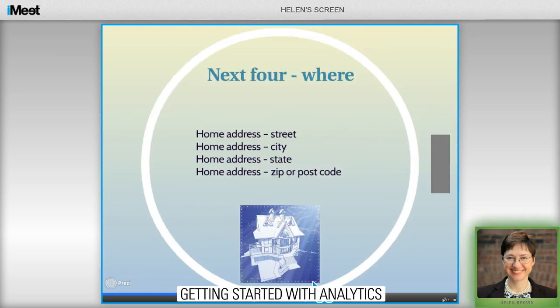The next group is all about where your constituent is. These four points are important, and if you have them, you might also want to think about adding another field just to indicate whether you do or don't have a home address. That will help you begin to pull lists to know where you have gaps that are fairly easy to fill.